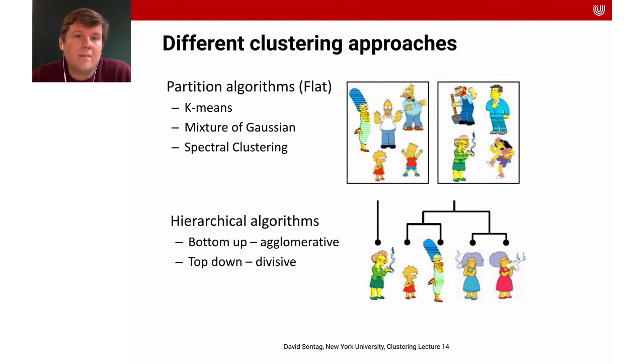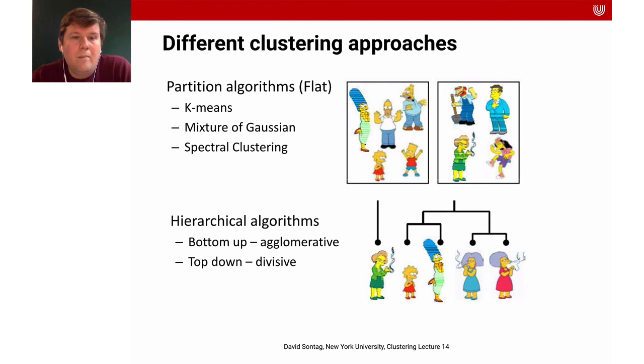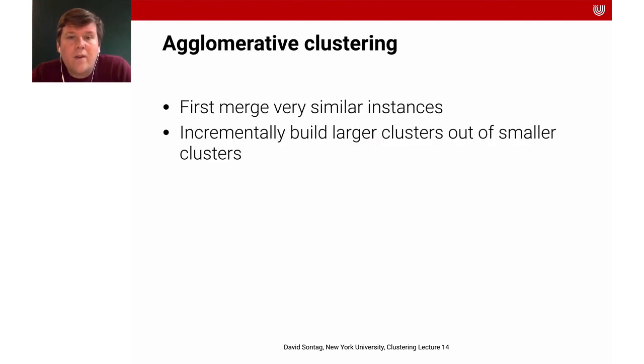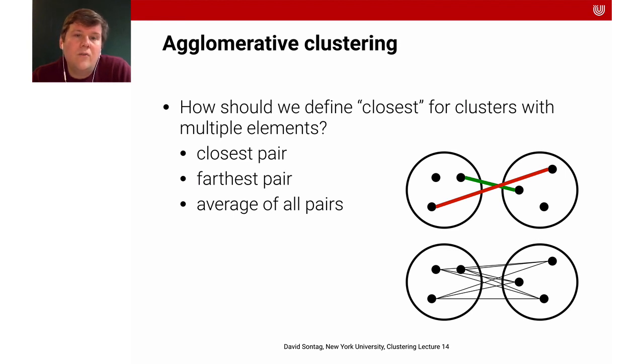Coming back to the clustering algorithms, so I showed you a partition algorithm here in detail, the k-means algorithm. There are also hierarchical algorithms like agglomerative clustering, and here the idea is quite simply to work bottom up. So you first try to merge very similar instances and then incrementally the larger clusters out of smaller clusters. So you maintain a set of clusters and initially each instance is its own cluster, and then you just repeat it. You pick the two closest clusters again based on a similarity metric like for instance the Euclidean distance, and then you merge them into a new cluster, and you stop when there's only one cluster left.